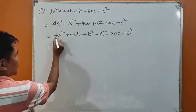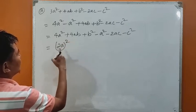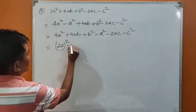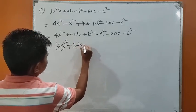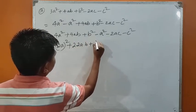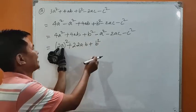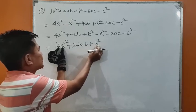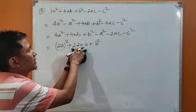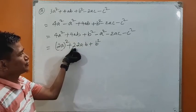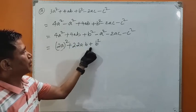Now, 4a square can be written as 2a whole square. And plus 4ab can be written as 2 times 2a times b, plus b square. So with a equal to 2a and b equal to b, we get a square plus 2ab plus b square, which gives 2a plus b whole square.